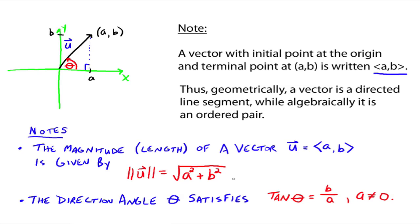And then if this is the angle theta here, that's the direction angle. That's telling you the direction of your vector. So the direction angle satisfies tangent theta equals B over A. This is from opposite over adjacent. And of course, A can't be zero.